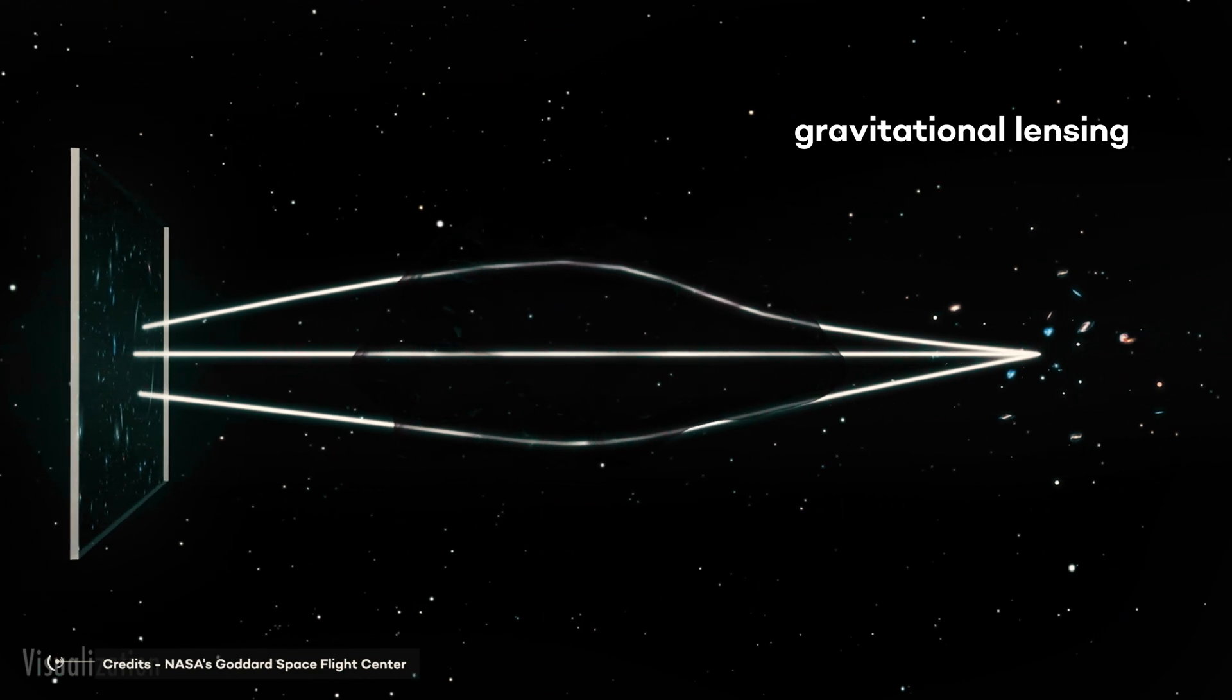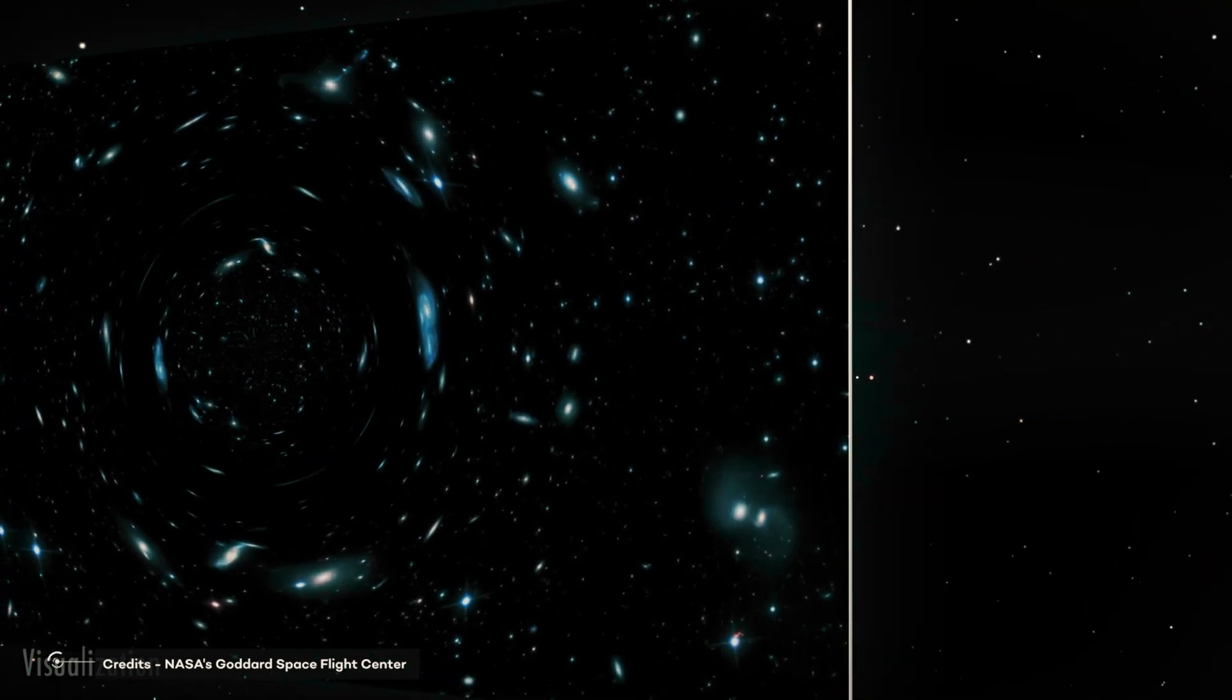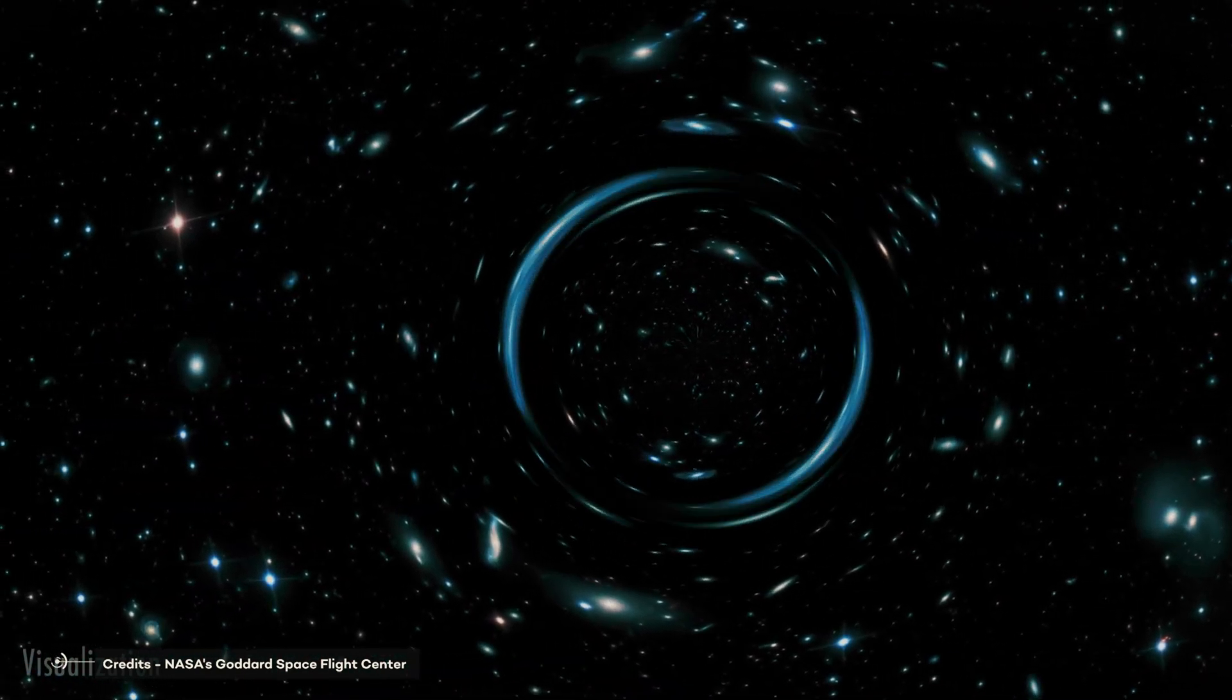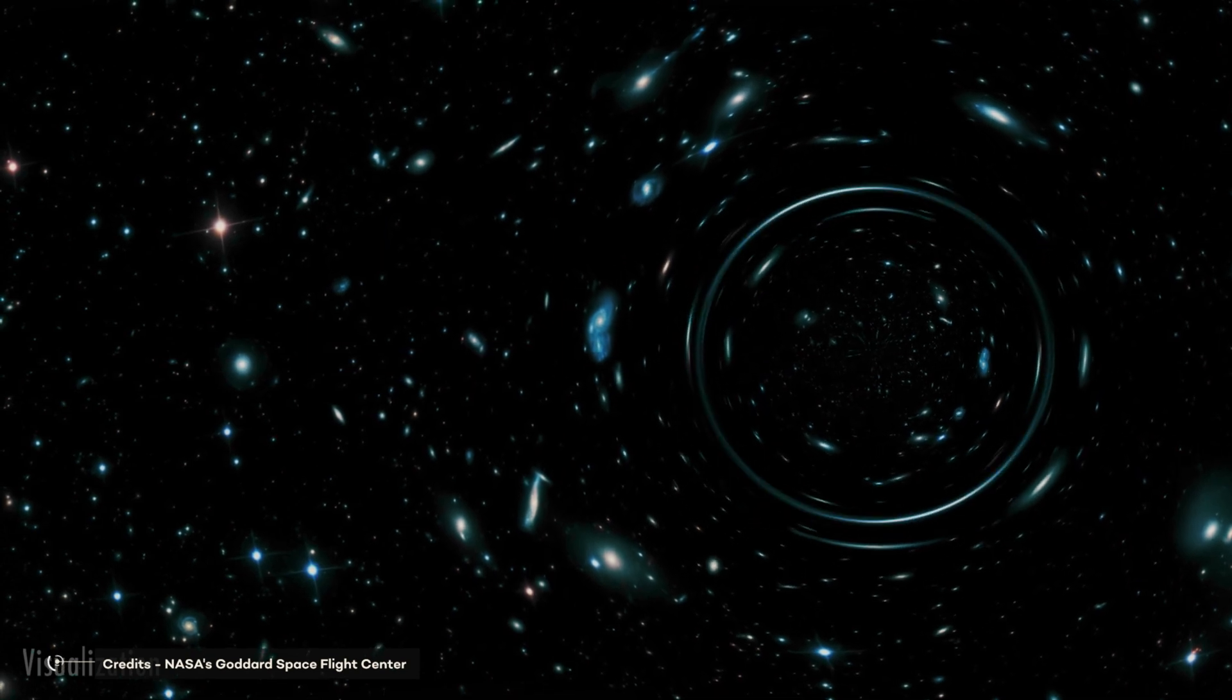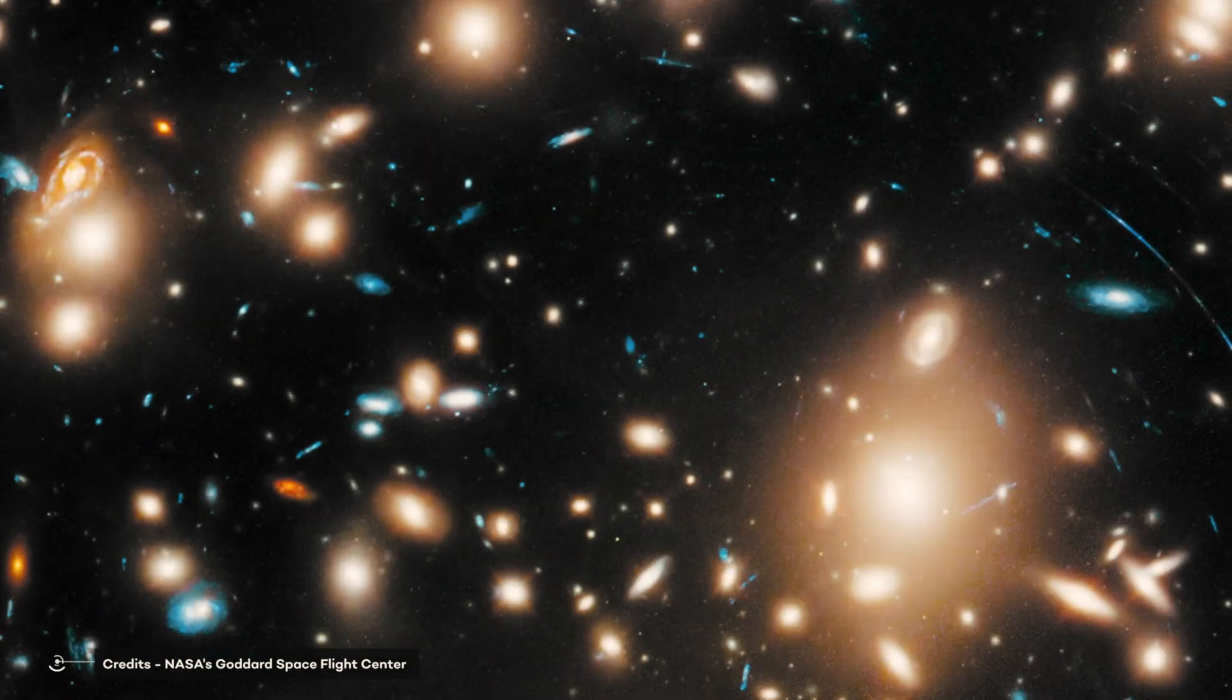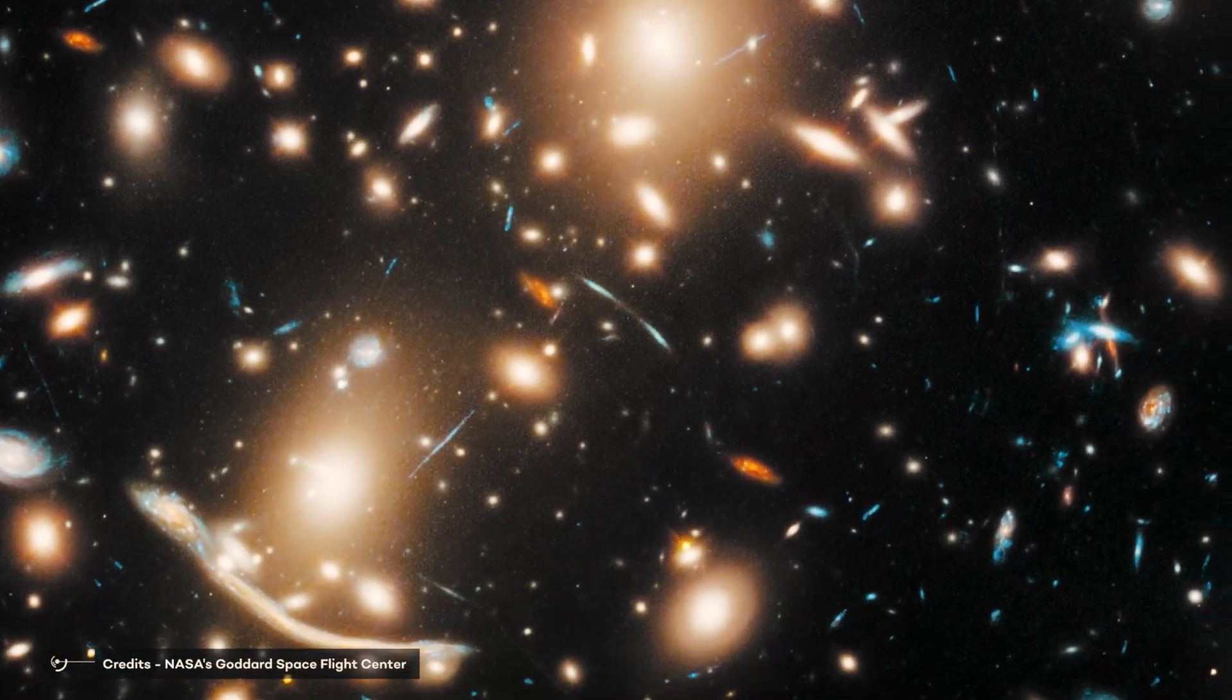Since astronomers cannot directly see dark matter, they detect its presence by observing how the gravity of massive galaxy clusters with a large amount of dark matter bends and distorts the light of more distant galaxies located behind them. Matter clumps together forming large galaxies, large galaxy clusters, and eventually us.